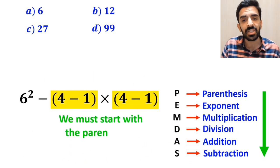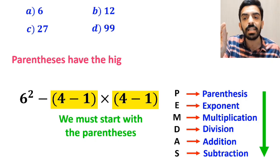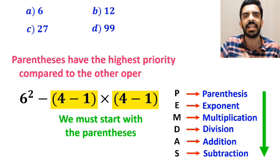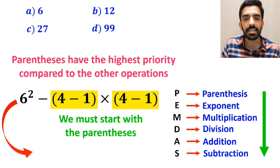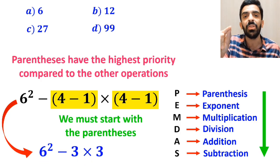So, we must start with the parenthesis first, because according to the PEMDAS rule, parenthesis have the highest priority compared to the other operations. Okay, instead of this expression, we can write 6 squared minus 3 then times 3.